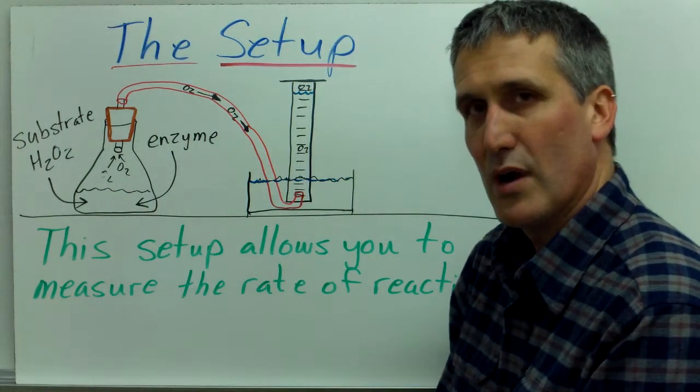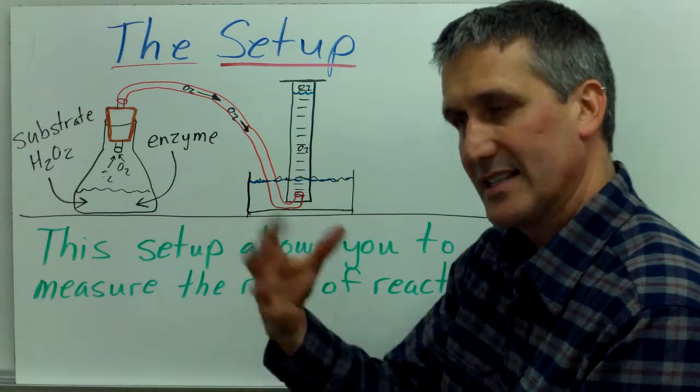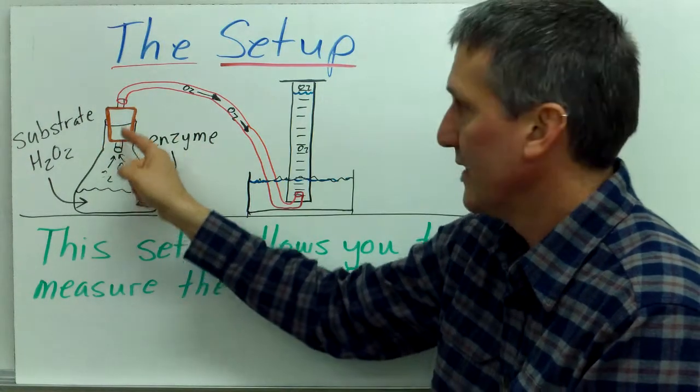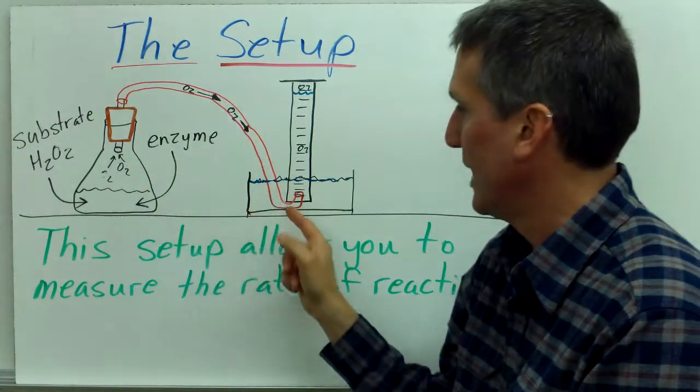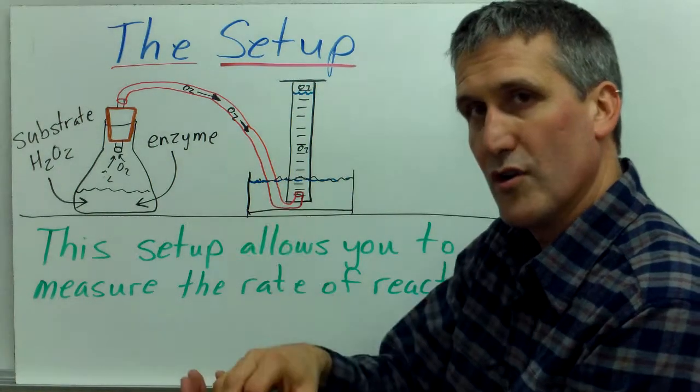The hydrogen peroxide is being broken down into water and oxygen gas. The oxygen gas will escape into the Erlenmeyer flask, but because we have it corked, the oxygen gas will travel through the tubing.